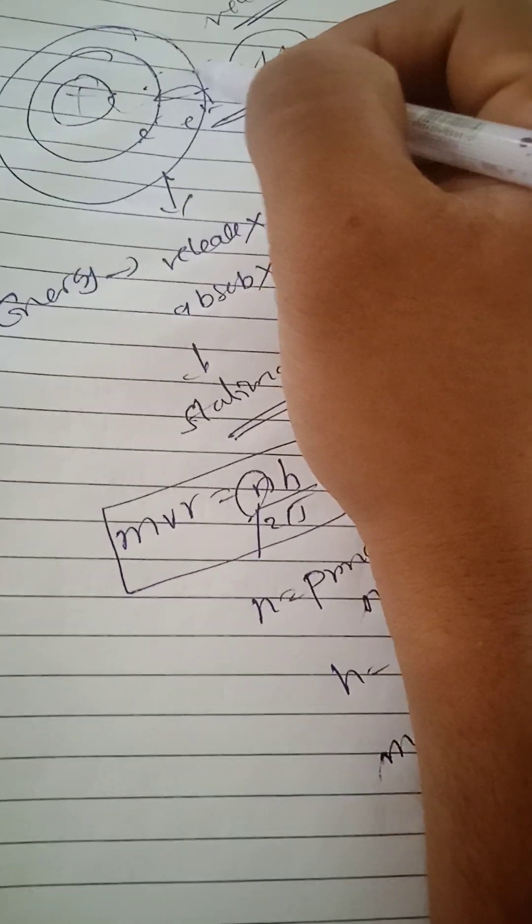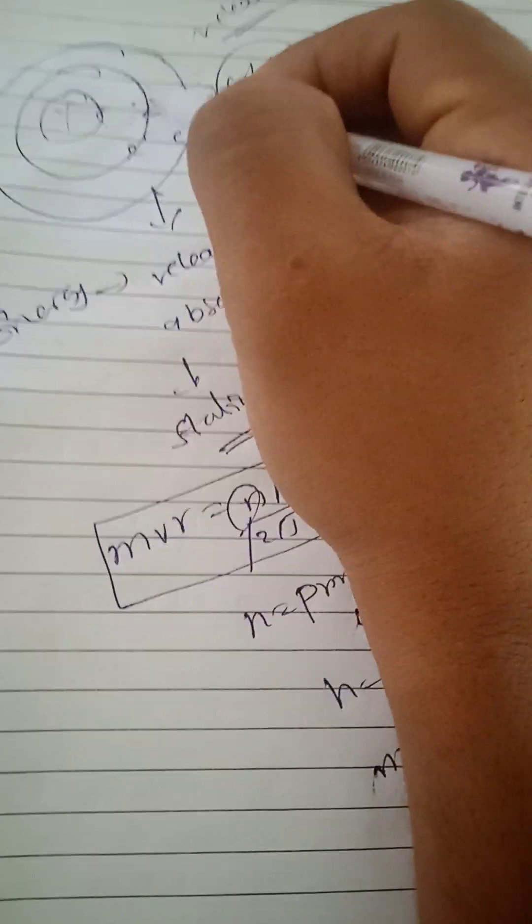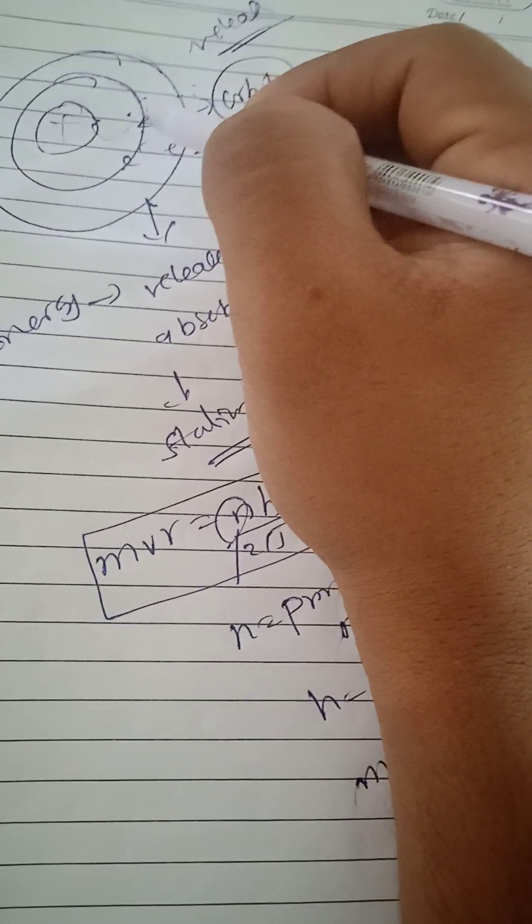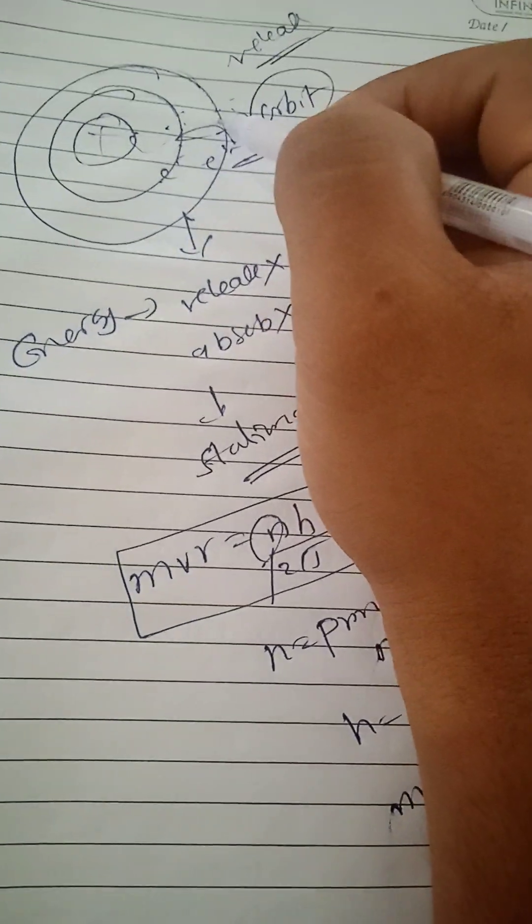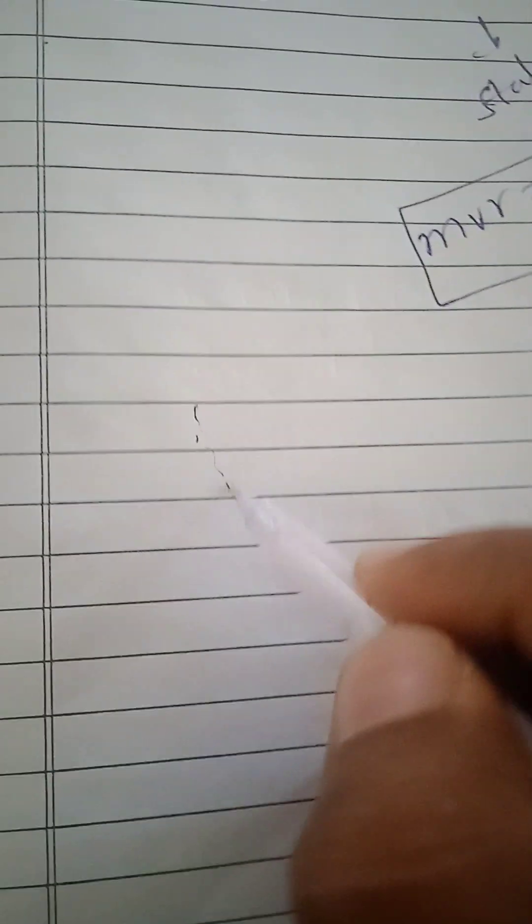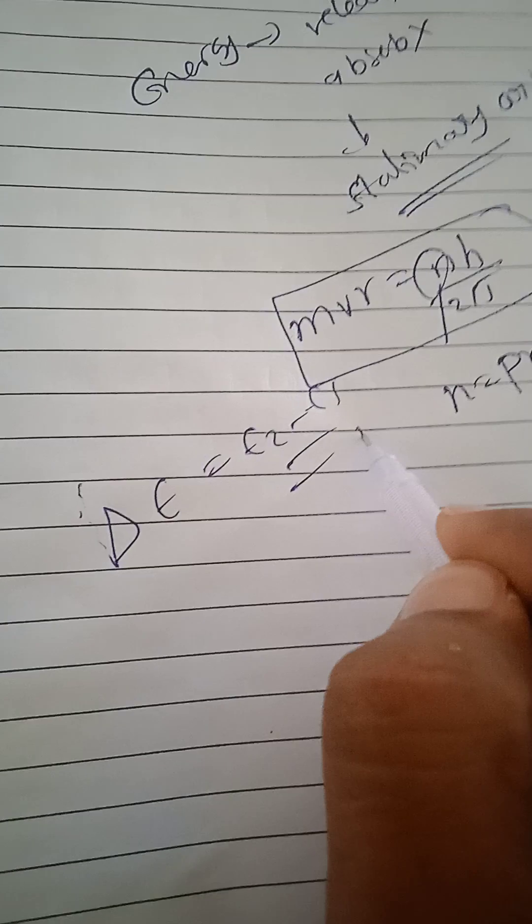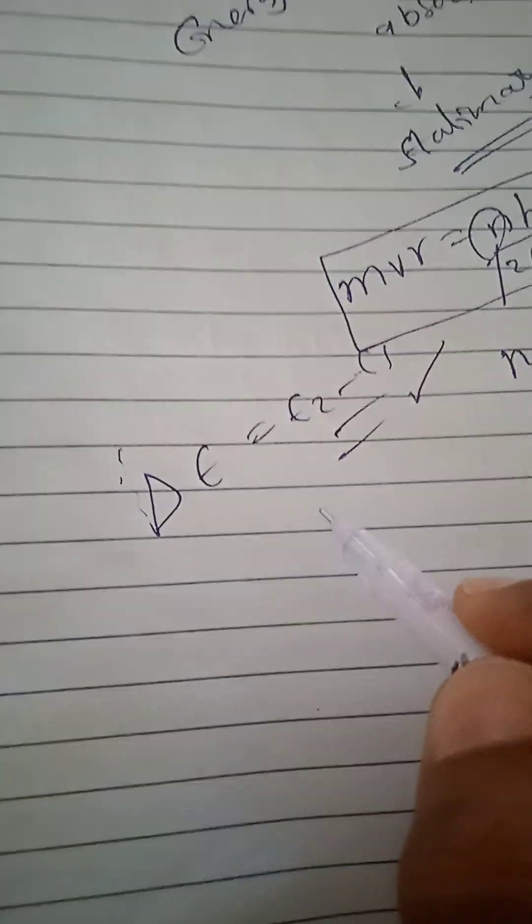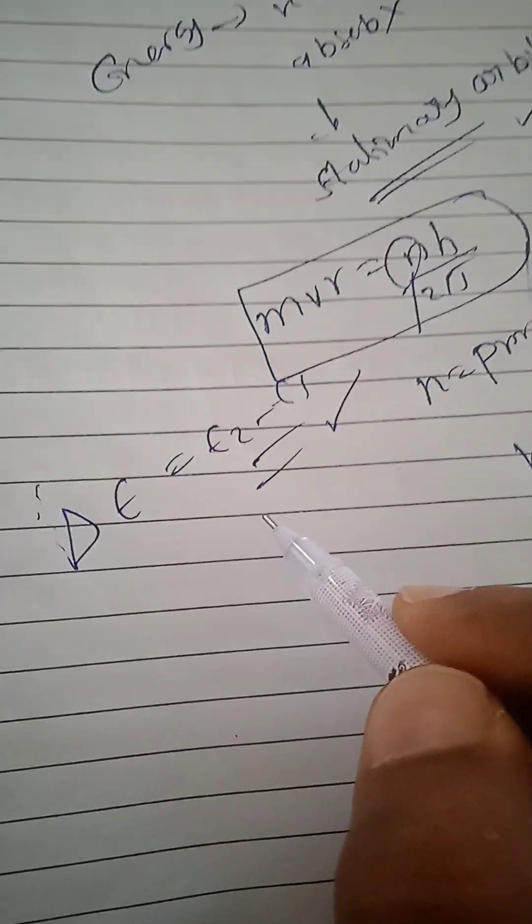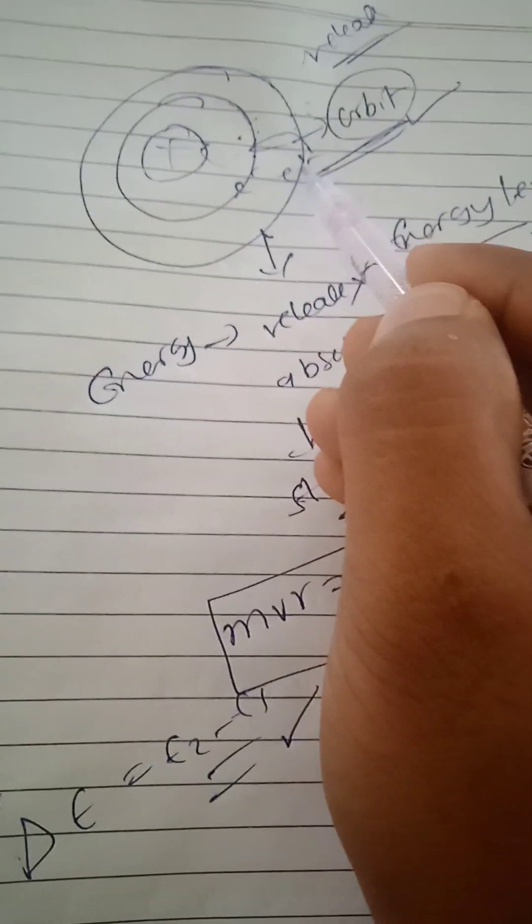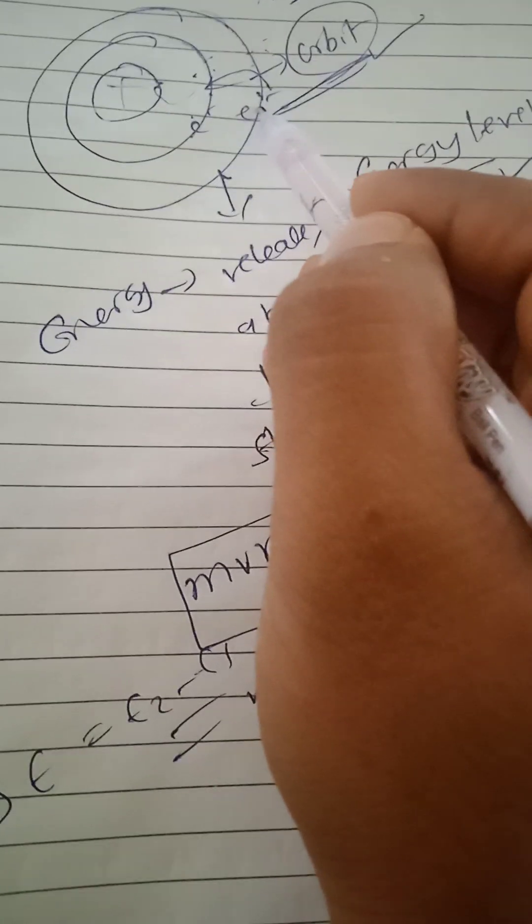When an electron jumps from higher orbit to lower orbit, it releases energy. When an electron jumps from lower orbit to higher orbit, it absorbs energy. The difference in energy is given by delta E equals E2 minus E1, where E2 is the energy of the higher orbit and E1 is the energy of the lower orbit.